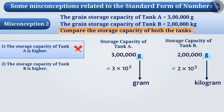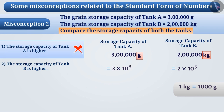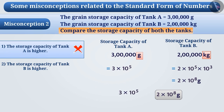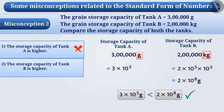Both numbers must be in the same units for comparison. Since 1 kg equals 1000 grams, that is 10³ grams, the capacity of tank B becomes 2 × 10⁵ × 10³, which equals 2 × 10⁸ grams. This is greater than 3 × 10⁵ grams. So the correct answer is option 2.